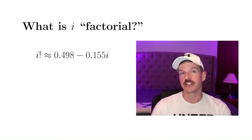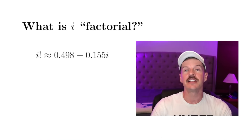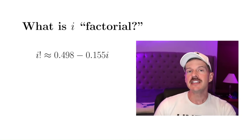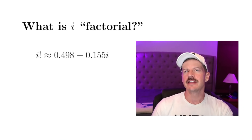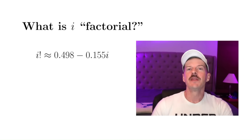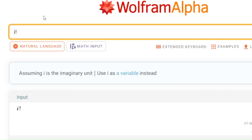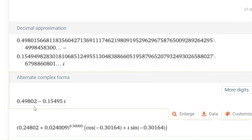It turns out that there's a special function called the gamma function that allows us to extend the idea of factorials beyond just integers, beyond the natural numbers, and even to the complex numbers. I've made a whole other video on the gamma function, and the link is in the description. But in this video, I'm going to avoid all of the terminology and notation related to the gamma function, and we're just going to look at the underlying idea and use that to figure out what i factorial is. And I'm not just making this up — if you go on Wolfram Alpha and type in i factorial, it gives you this answer: 0.498 minus 0.155i. So this is a legitimate thing.